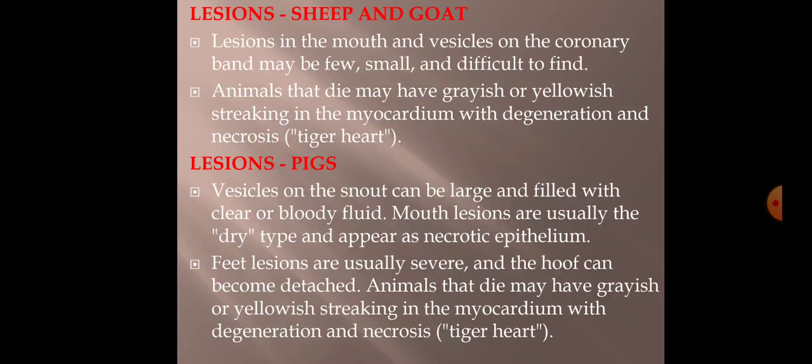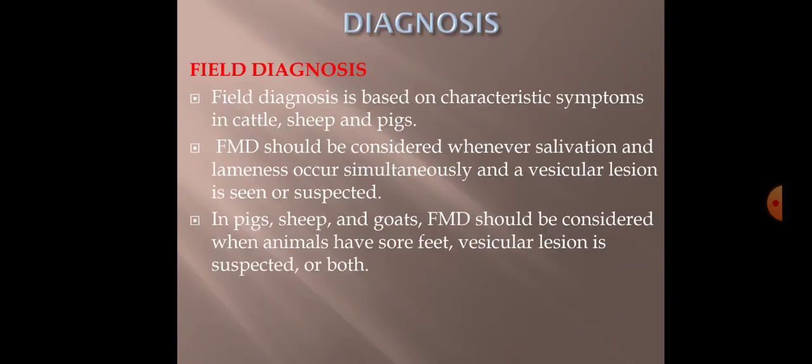Tiger heart appearance may also be seen in sheep, goats, and pigs, but lesions are not as peculiar as in cattle. In field diagnosis, you can mostly diagnose FMD by visualizing the signs and symptoms of the disease.